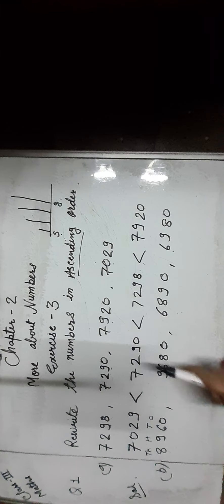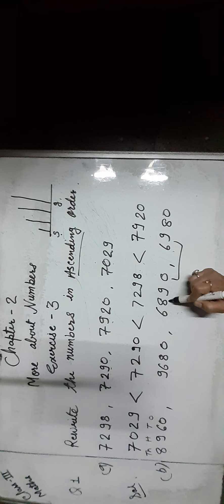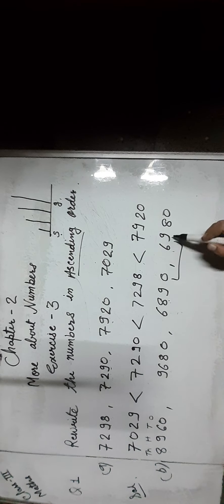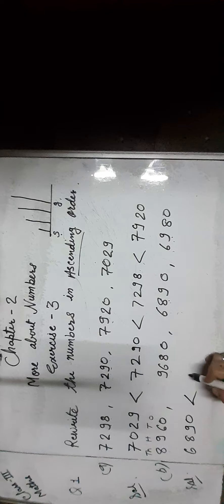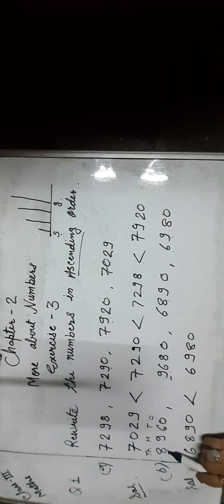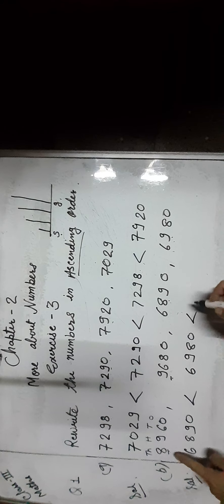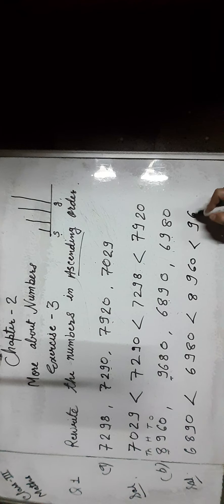We have to move with the smallest digit. So 8 and 9 are greater than 6, so first we compare both numbers with 6 at the 1000s place. The 1000s digits are same, so we move to the 100s place: that is 8 and 9. Since 8 is smaller than 9, we first write 6,890. Then we write 6,980. For the remaining numbers, the 1000s digits are 8 and 9. Since 8 is smaller than 9, we write 8,960, and at last 9,680.